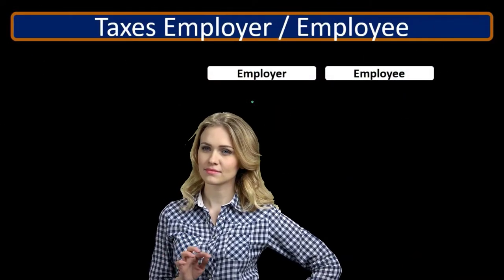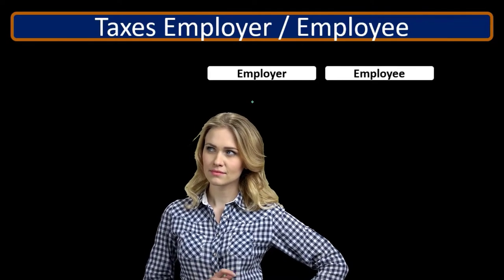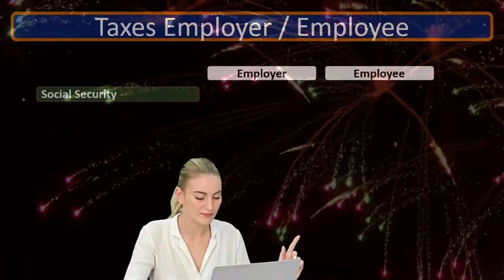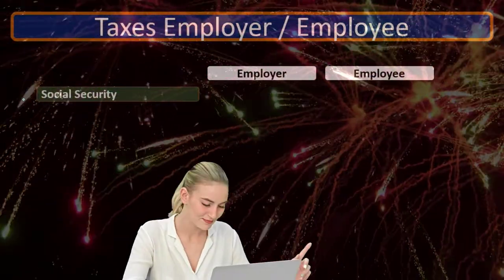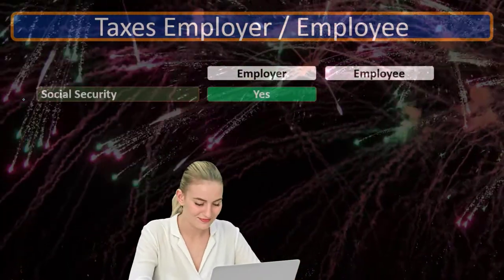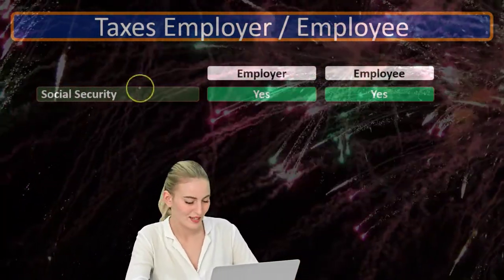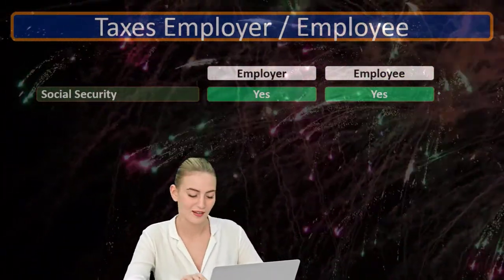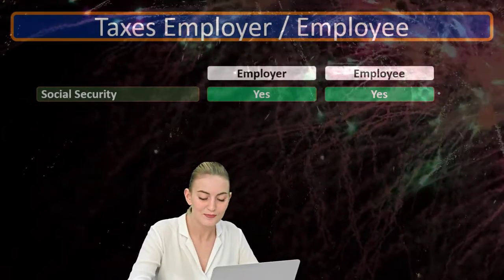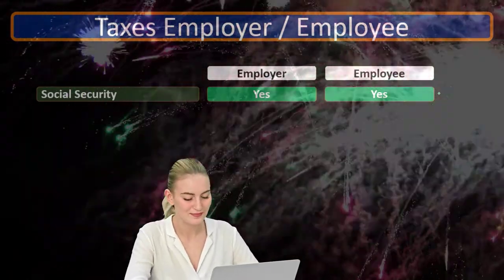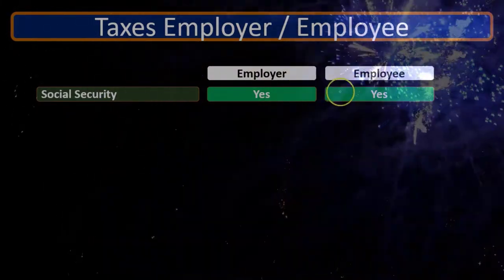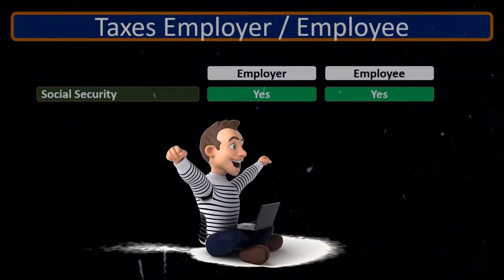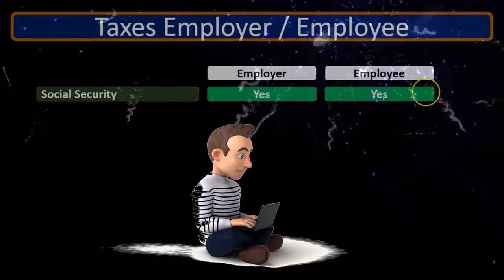If you memorized the last slide, you have an advantage here if you can recall what you remembered. So we're going to go through these. Social Security — what type of tax is that? Is it an employer tax, an employee tax, or both? We're going to say it is both an employer and an employee tax. Social Security was set up kind of like a 401k matching plan, so there's an employer portion and an employee portion — each currently paying, I believe, 6.2% of the employee wages.